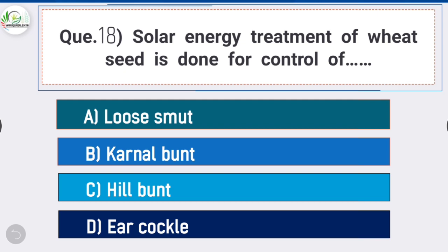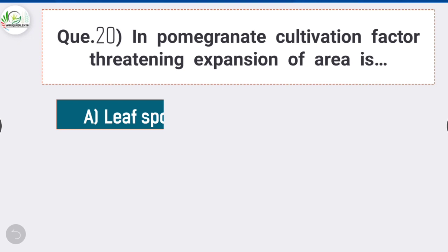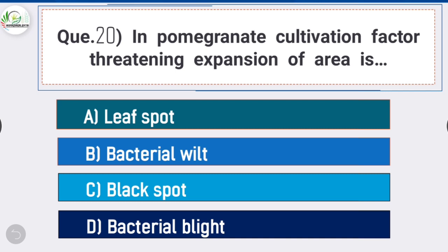Question number eighteen: solar energy treatment of wheat seed is done for the control of - answer is option A - loose smut. Solar energy treatment of wheat seed is used for the control of loose smut. Question number nineteen: which of the following is the oldest method of grafting? Answer is option A - approach grafting. Question number twenty: in pomegranate cultivation, the factor threatening expansion of area is - answer is option D - bacterial blight.